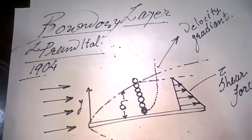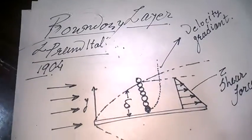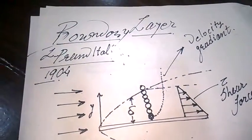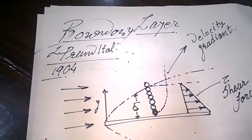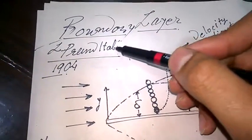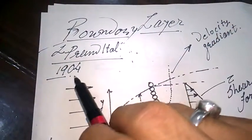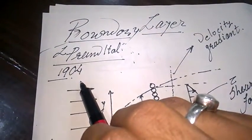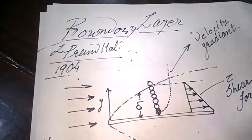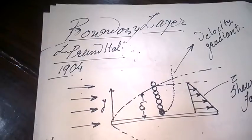Today we will see what is the boundary layer theory. The boundary layer theory was first invented by Ludwig Prandtl in 1904.